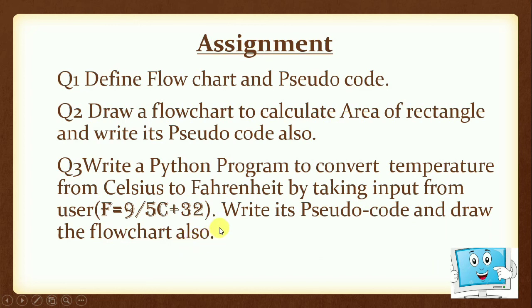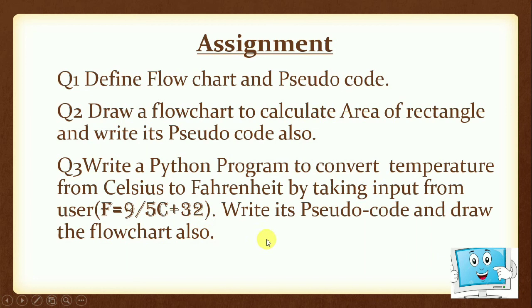Third: write a Python program to convert temperature from Celsius to Fahrenheit by taking input from the user, using the formula F = (9/5)*C + 32, and write its pseudocode and draw the flowchart. In pseudocode: input Celsius temperature, apply the formula as processing, then output Fahrenheit temperature — three simple steps. For the flowchart: input, processing with the formula, output. When you program it in Python, use the input() function to take Celsius temperature from the user, apply the formula using your variable names — either 'celsius'/'fahrenheit' or short 'C'/'F'. This part one of this chapter is completed. After this, we will move to further topics of this chapter. Thank you so much.